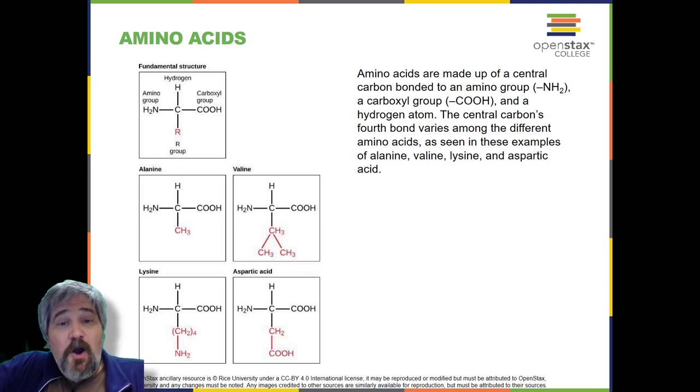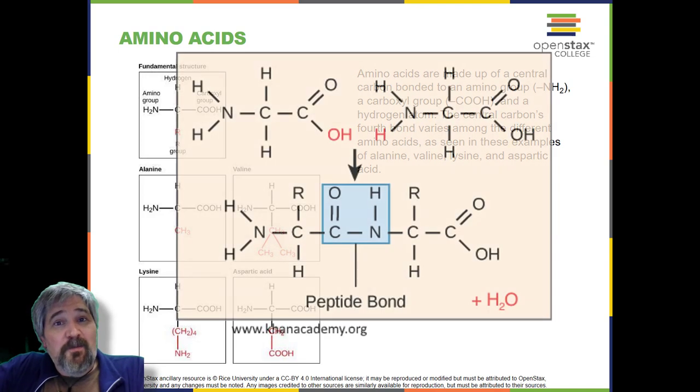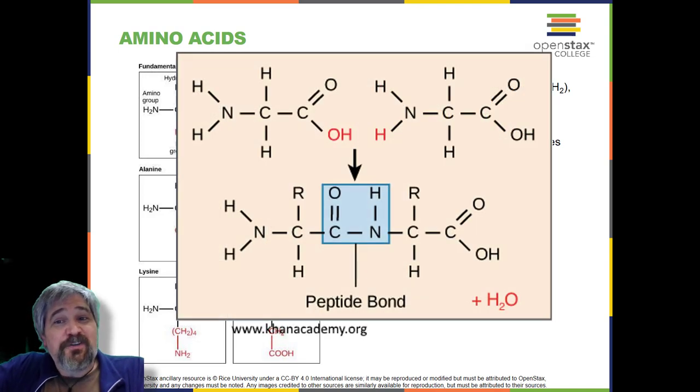The chemical nature of the R group determines the chemical nature of the amino acid within its protein, that is, whether it is acidic, basic, polar, or non-polar. The sequence and number of amino acids ultimately determine a protein's shape, size, and function. Each amino acid is attached to another amino acid by a covalent bond, known as a peptide bond, which is formed by a dehydration reaction. The carboxyl group of one amino acid and the amino group of a second amino acid combine, releasing a water molecule. The resulting bond is the peptide bond.